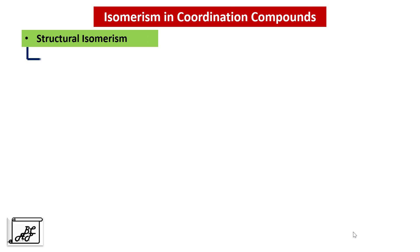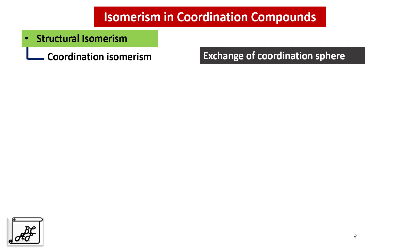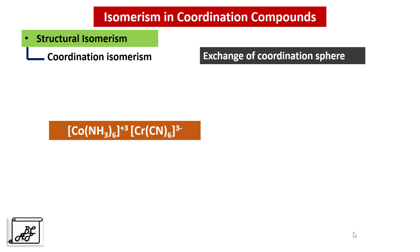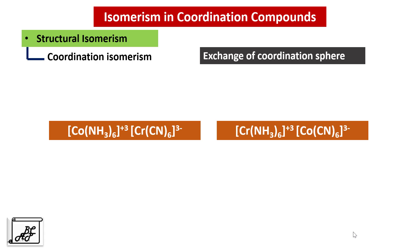Let's move to the next type: Coordination Isomerism. As the name says, it differs in exchange of coordination sphere. Ionization and Hydrate Isomerism differ in the primary ionization sphere, whereas Coordination Isomerism differs in the secondary non-ionization sphere. In the first example, ammonia molecules are associated with cobalt and cyanide molecules with chromium. In the second, ammonia is with chromium and cyanide is with cobalt, while the overall formula remains the same.